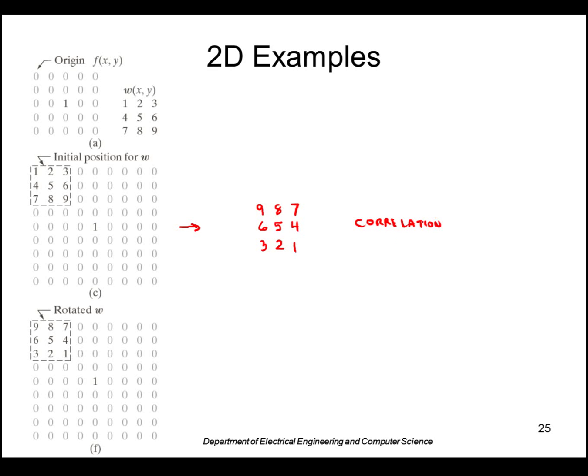And convolution: we flip the mask as you can see here about both axes, correlate then, and we get the original mask back exactly. So that's what we get in the case when we correlate or convolve a mask with an impulse.